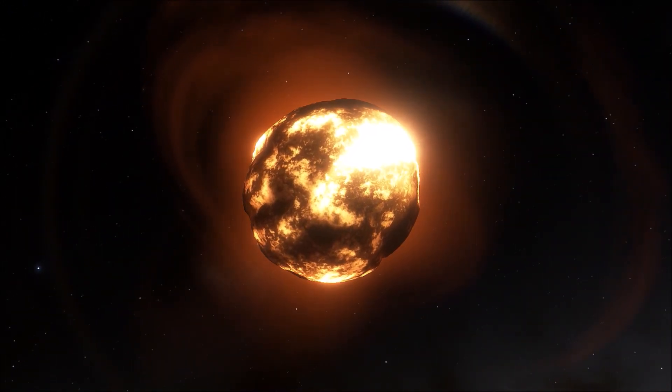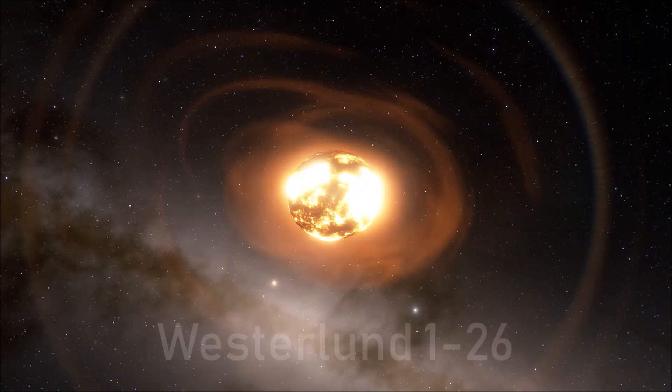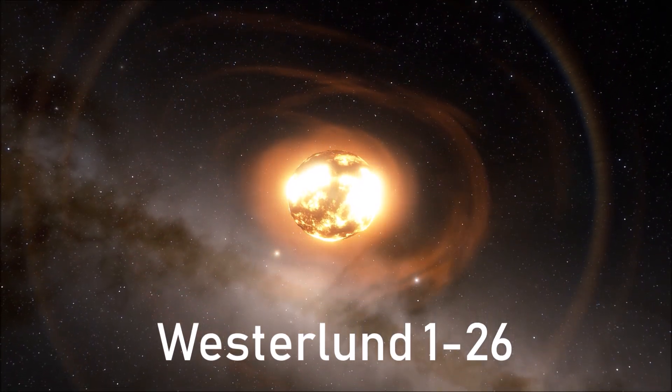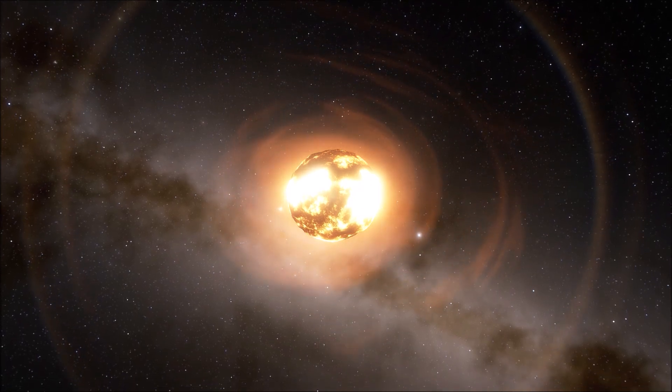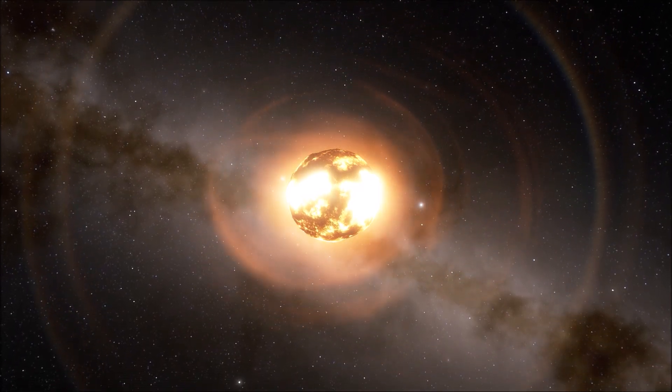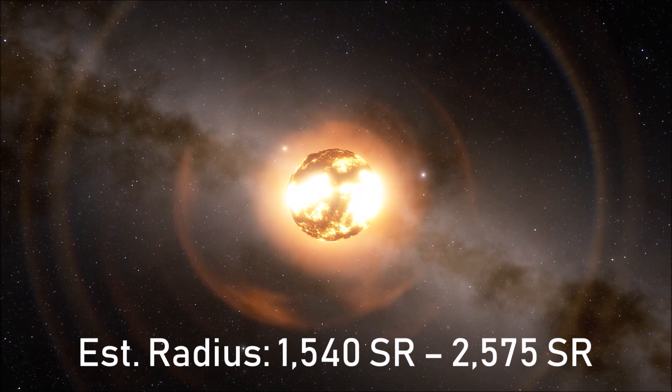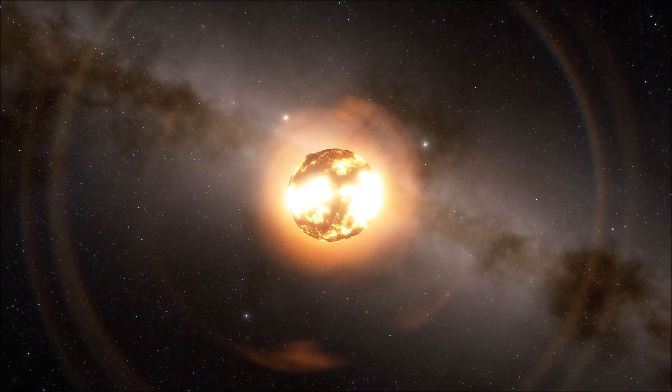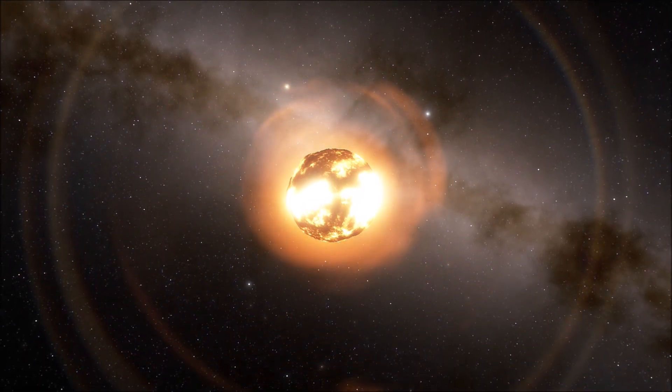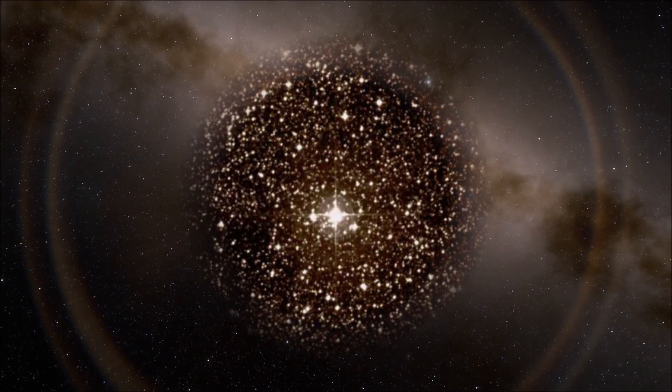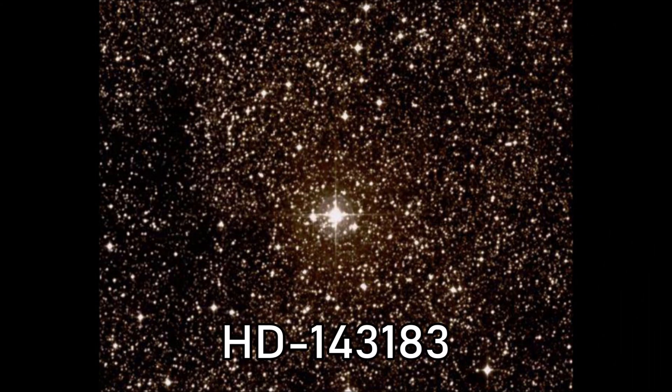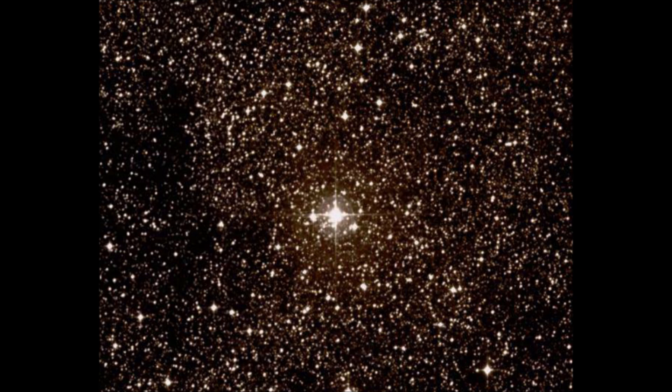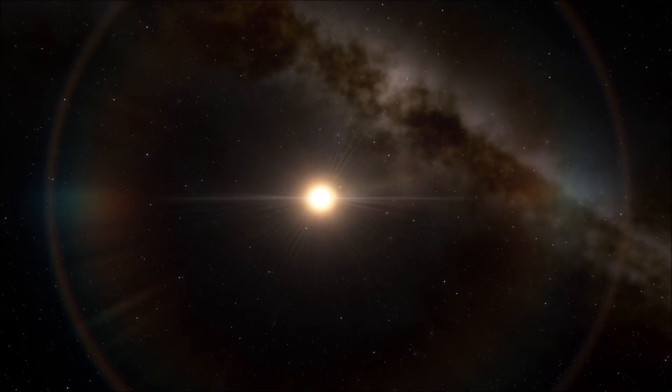Something slightly closer to home is Westerlund 1-26, a star with very strong radio emissions, but again it has very vague estimates of its size associated with it, with a difference in upper and lower bound of over 1,000 solar radii. Something maybe only a fraction larger than VY Canis Majoris is HD 143183, a red supergiant with much more precise estimations, perhaps just under 1,500 solar radii, a very similar size to the former largest known star.